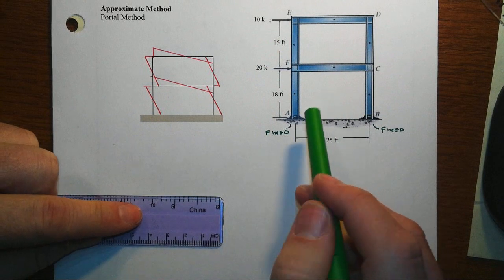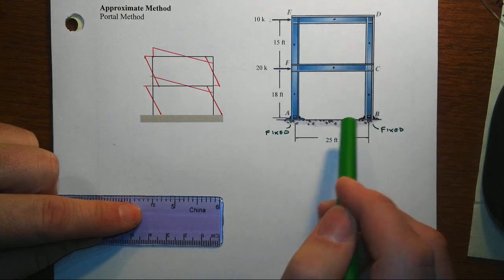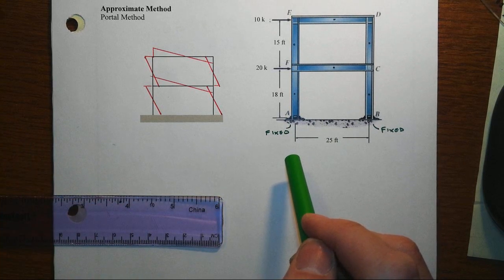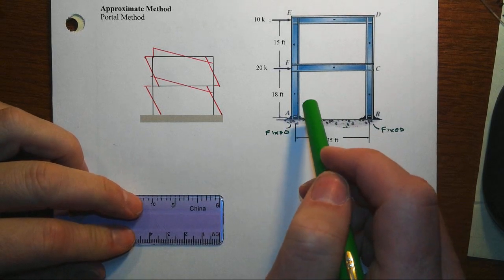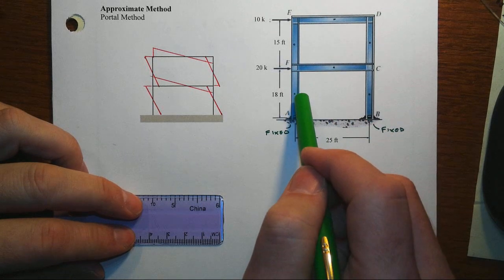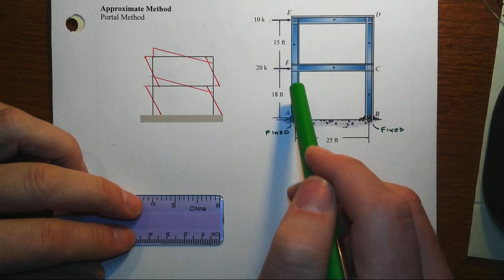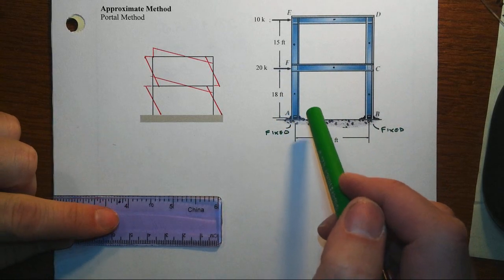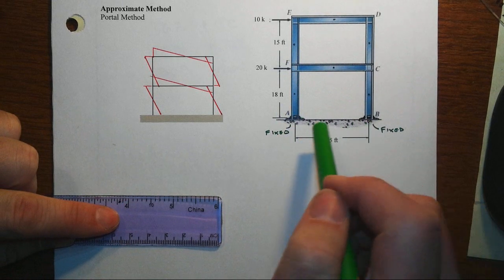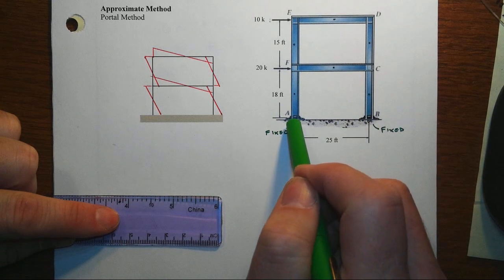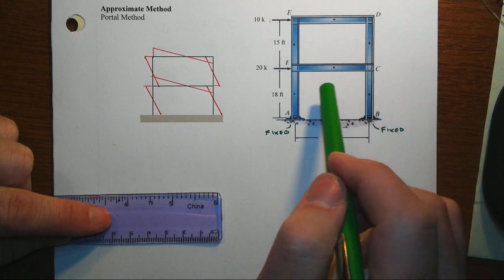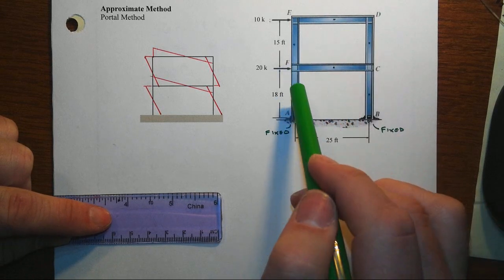Now one key thing to keep in mind as you apply the portal method is that we've got support conditions that in this case are fixed. So when we say to go to the columns and assume that the inflection point for the columns for lateral loads in a moment frame are at the midpoint, well that's true if the top and the bottom of the column are attached rigidly to something, as the case would be here. If we had pinned foundations here, then the inflection point would be at the foundation. But we got fixed, so we'll assume that the inflection point for the columns is at the midpoint.